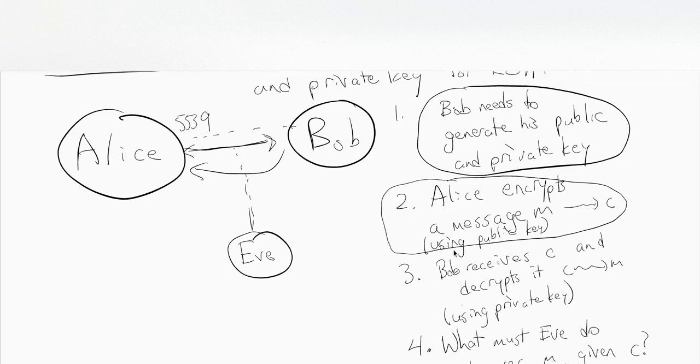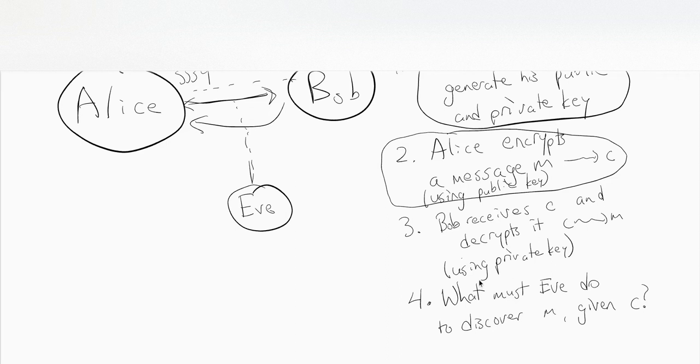The third step is Bob receives the cipher text and then he is able to retrieve the original message m, and this uses his private key. In the fourth video we'll talk about how hard is it really that Eve has her hand on c and how hard is it to discover what m is.